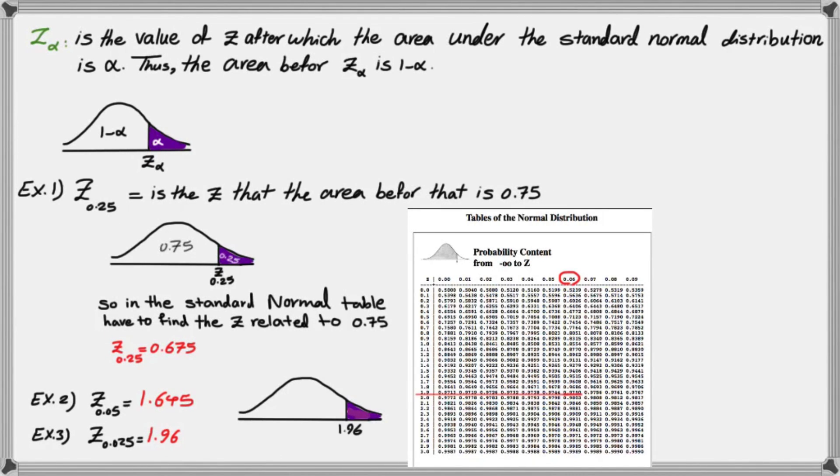This means that at 1.96, the area under the standard normal curve on the right-hand side is 0.025, and before that is 0.975.